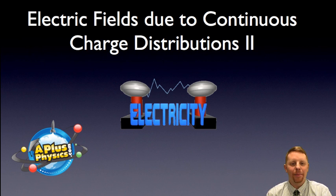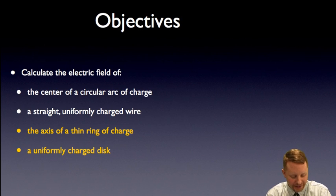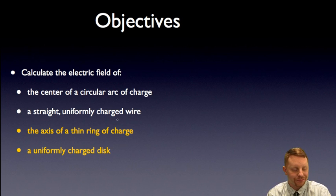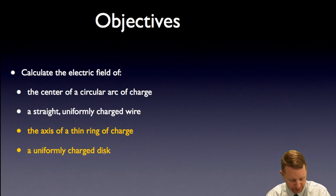Hi everyone and welcome back. We're going to continue our discussion of electric fields due to continuous charge distributions today. Last time we calculated the electric field at the center of a circular arc of charge and a straight uniformly charged wire. Now we're going to do two more: we're going to find the electric field on the axis of a thin ring of charge and the electric field due to a uniformly charged disk.